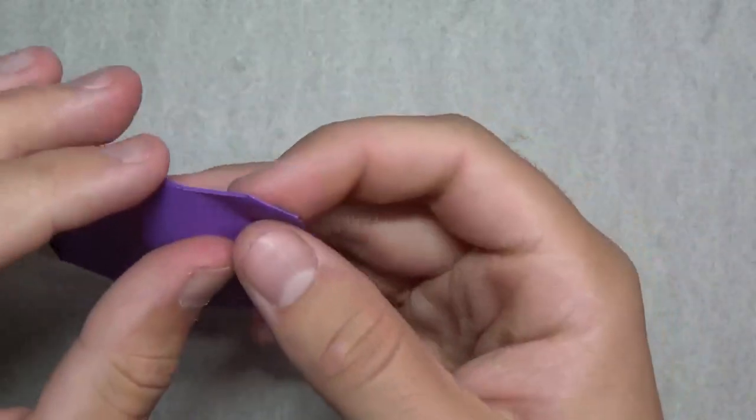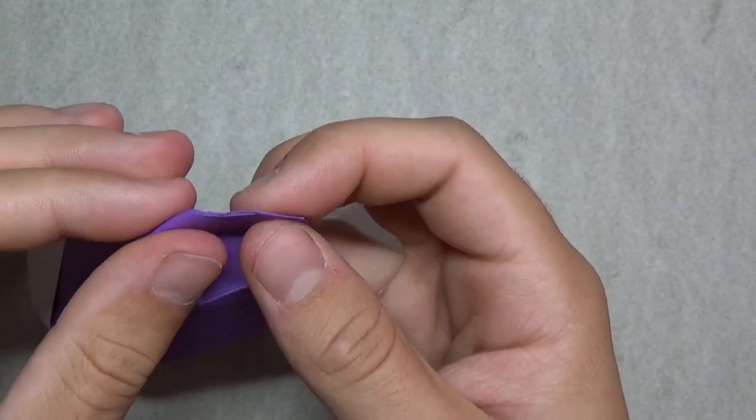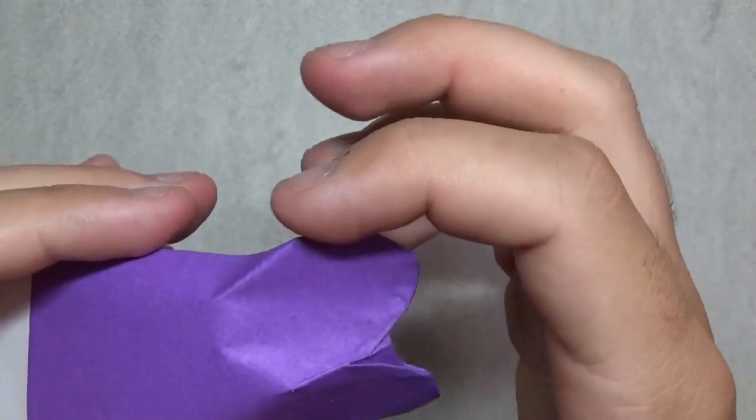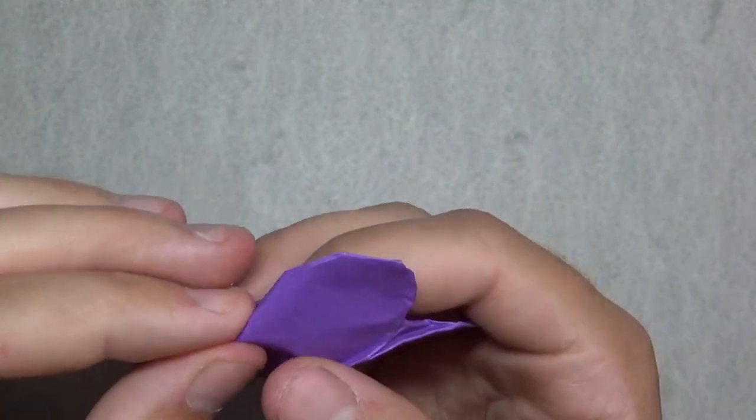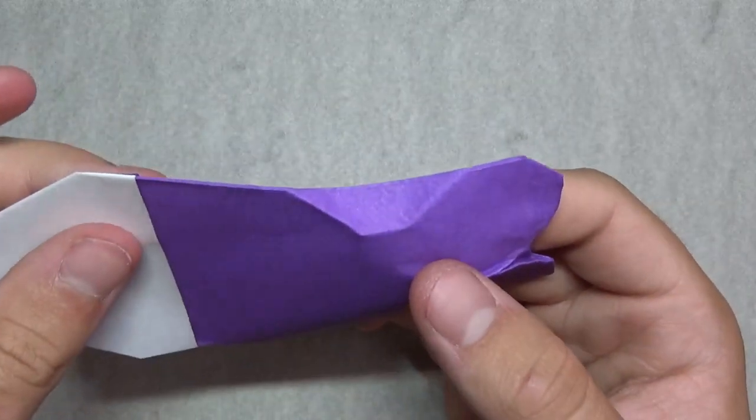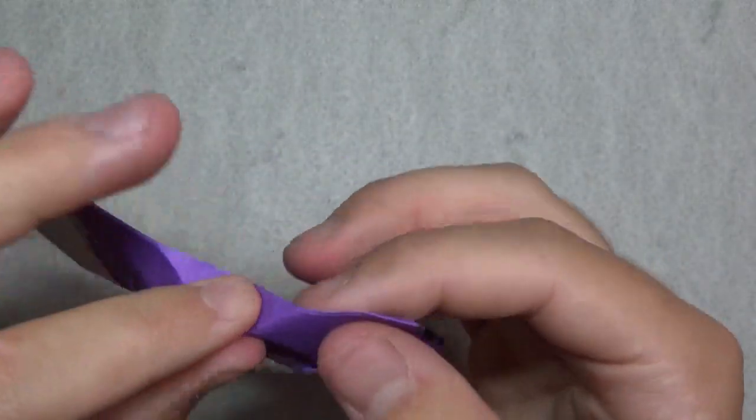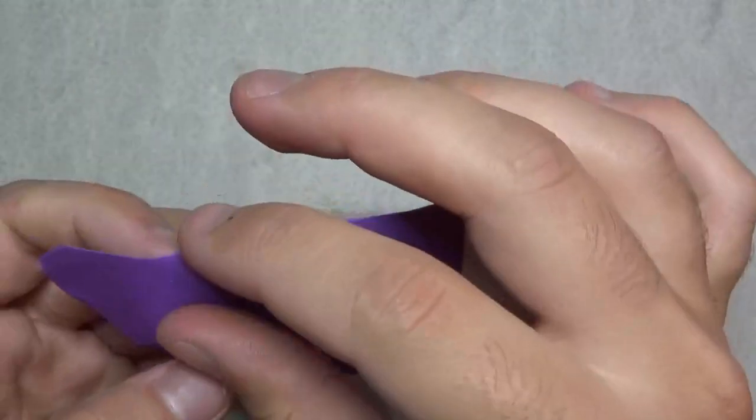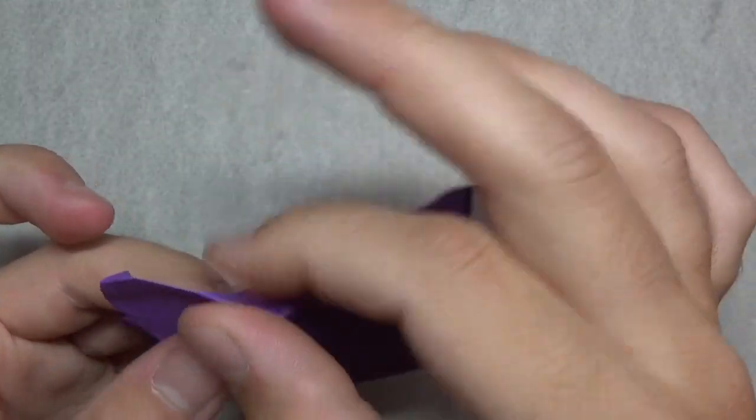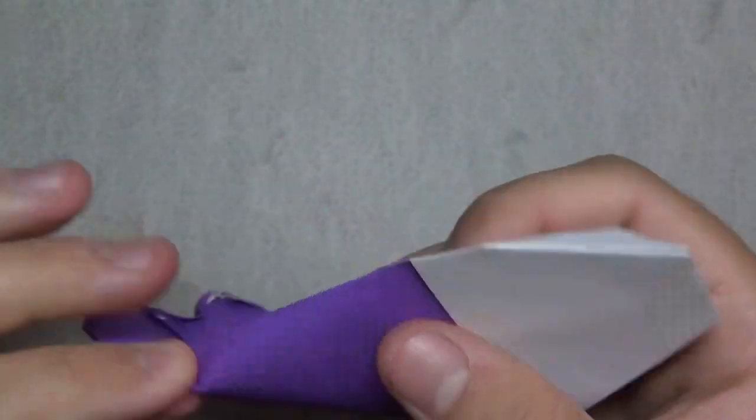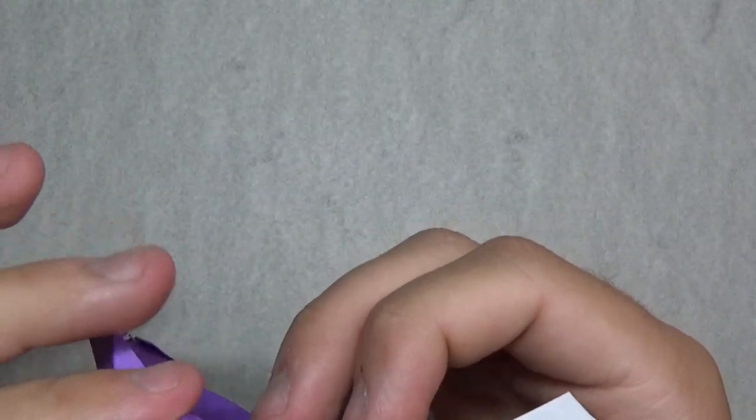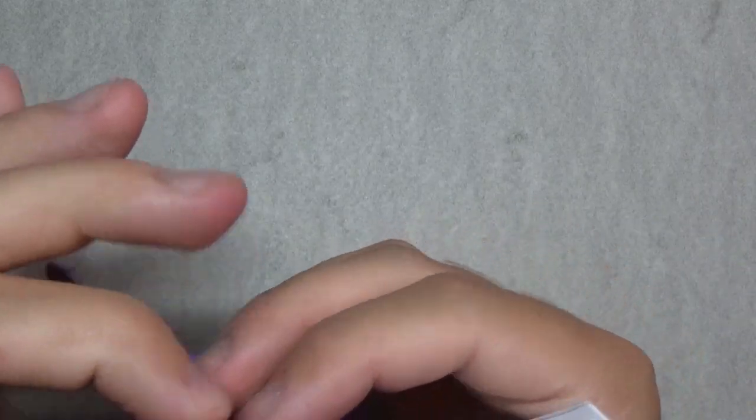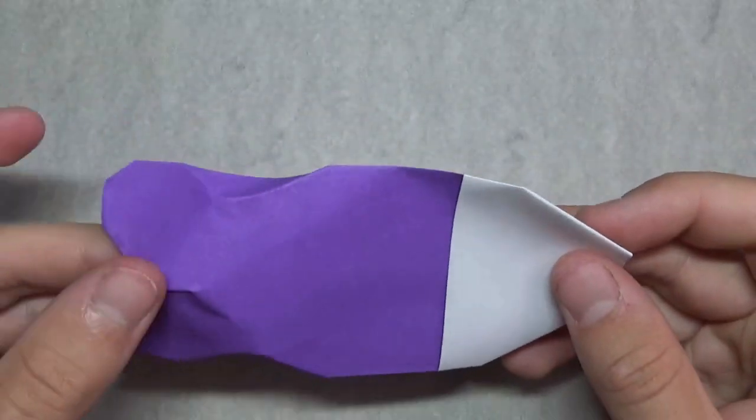Alright. And now we're going to make a curved fold to taste. So just about like that. Just make sure there's a straight line right here, and just make a curved fold to about there, to about like that. Alright. Give that nice curvature. And repeat on this side. Alright, like that.